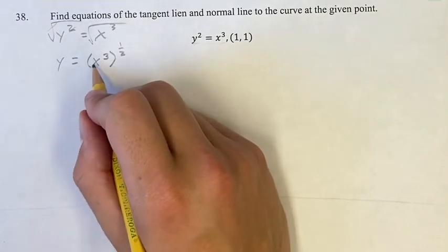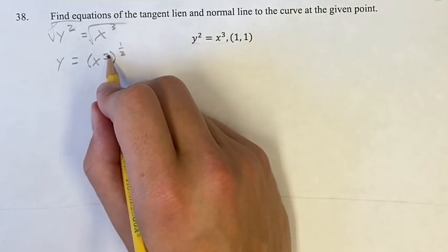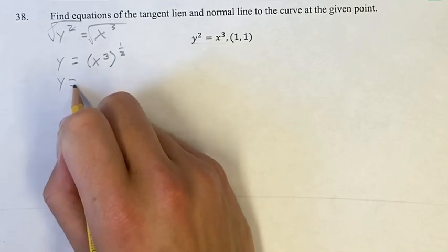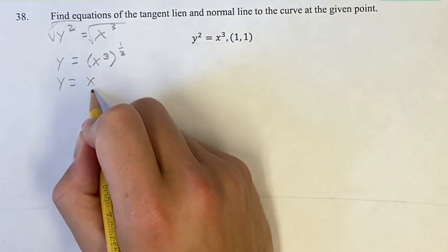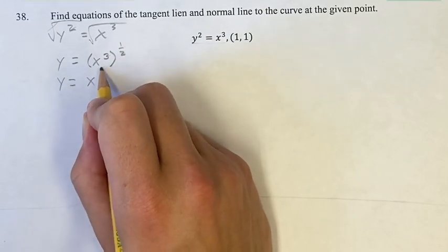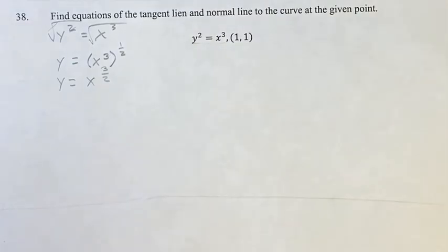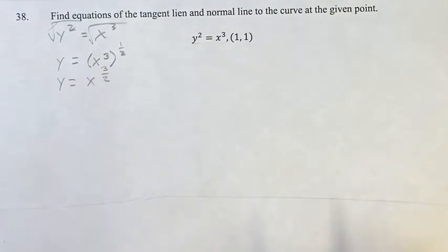If we have x cubed to the one-half power, we can multiply the exponents, which gives us y is equal to x to the three times one-half, which is three over two. Now this is a power function, and we can find the derivative of it more easily.